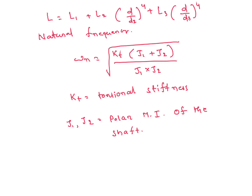Here the natural frequency formula is: omega n equal to square root of Kt into (J1 plus J2) divided by (J1 into J2), where Kt is the torsional stiffness of the shaft and J1 and J2 are the polar moments of inertia of the shaft, given by pi by 32 D to the power 4. This question was asked so many times in ISRO and IES exams, so it is also important.